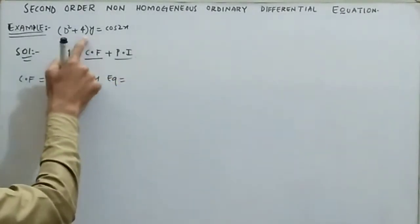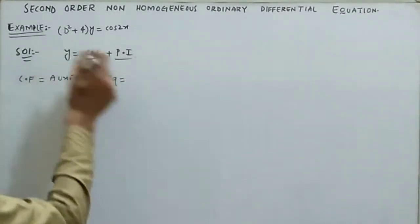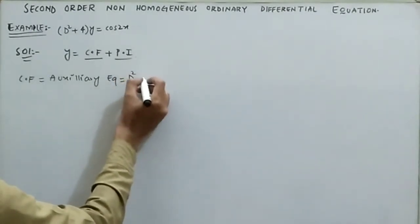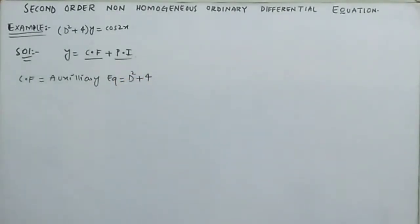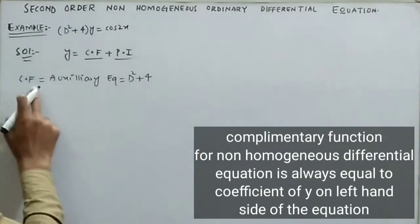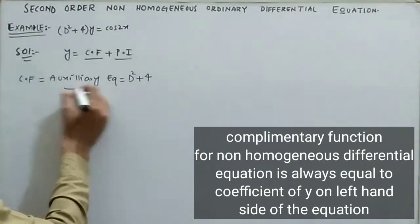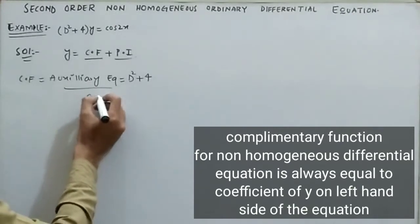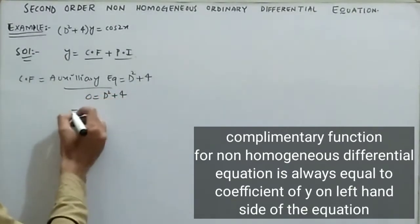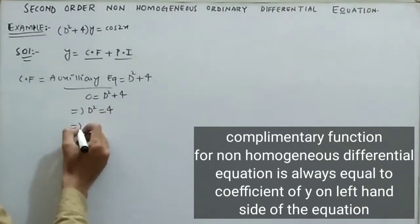The auxiliary equation is equal to the coefficient of y, which is d² + 4. Our auxiliary equation is d² + 4 = 0. Solving this, we get d² = −4.